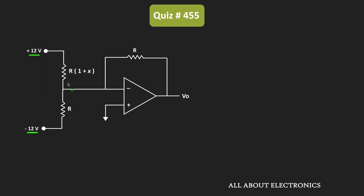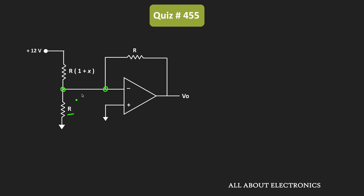First, let us assume that only plus 12V is acting alone, and minus 12V is connected to the ground terminal. Now, one terminal of this resistor is connected to ground, and because of the virtual ground, this inverting terminal will also act as a ground terminal. That means both terminals of this resistor are connected to ground, and therefore no current will flow through it — this resistor acts as if it is not connected in the circuit.